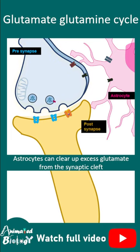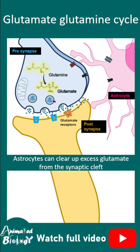In the presynaptic terminal, when an action potential reaches the terminus, there would be release of glutamate, and glutamate binds to the postsynaptic glutamate receptor. Glutamate is formed from the presynaptic glutamine with the help of the enzyme glutaminase.